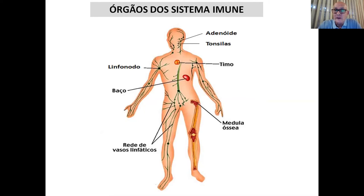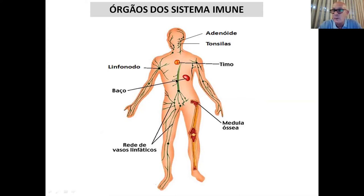Os outros órgãos linfóides são regiões onde nossas células imunes vão morar. Elas têm uma característica única: são as únicas células que circulam — todos os outros sistemas têm células imobilizadas. Assim, elas podem sair de um gânglio linfático, cair na linfa ou no sistema circulatório, passear pelo nosso corpo, voltar para esse lugar ou parar em outro órgão linfóide.